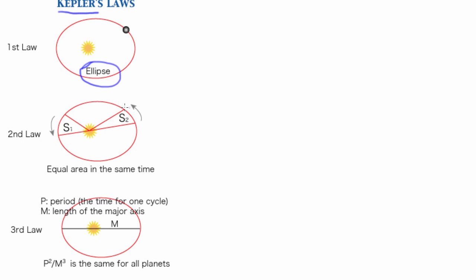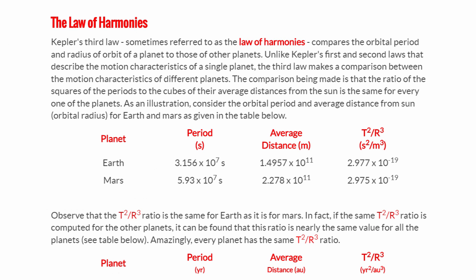He also had the second law where he proved that in an ellipse, in equal time, an object is going to create equal areas. This was called the law of areas. But it's the third law that we're going to talk about in detail because that's the law that makes it a little bit more interesting. There's a website I'm posting in the description that talks about this law, also known as the law of harmonies.